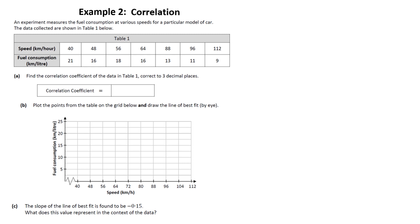Example 5.2 correlation. So the first thing we've been asked is to find the correlation coefficient of this data and table one correct. Three decimal places. So this data is an experiment measuring the fuel consumption at various speeds for a particular model of car. And they've given us the speed in kilometres per hour and fuel consumption in kilometres per litre. And so when we work out that correlation, we get 0.957. So remember they said three decimal places.